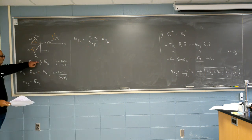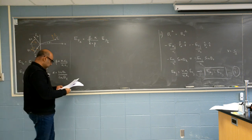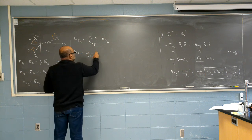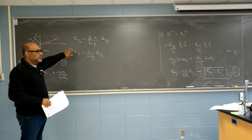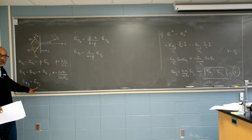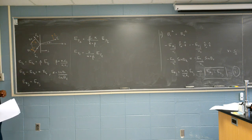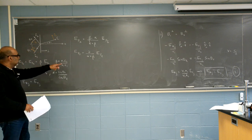Just by adding these two equations, I get α plus β in the denominator. So E_PR equals (β − α)/(α + β) times E_PI. And E_PT equals 2/(α + β) times E_PI. So at least with fields polarized in the plane of incidence, we can compute both the reflected and the transmitted amplitudes.